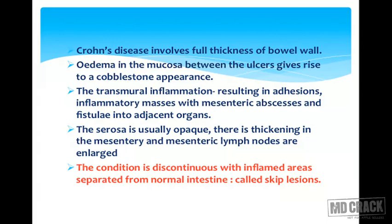This is important as MCQs often ask which disease gives a cobblestone appearance — it is Crohn's colitis or regional enteritis. The transmural inflammation results in adhesions, inflammatory masses with mesenteric abscess, and fistulas into adjacent organs. There is thickening in the mesentery and mesenteric lymph nodes are enlarged. This condition is discontinuous, with inflamed areas separated from normal bowel, and these are called skip lesions.